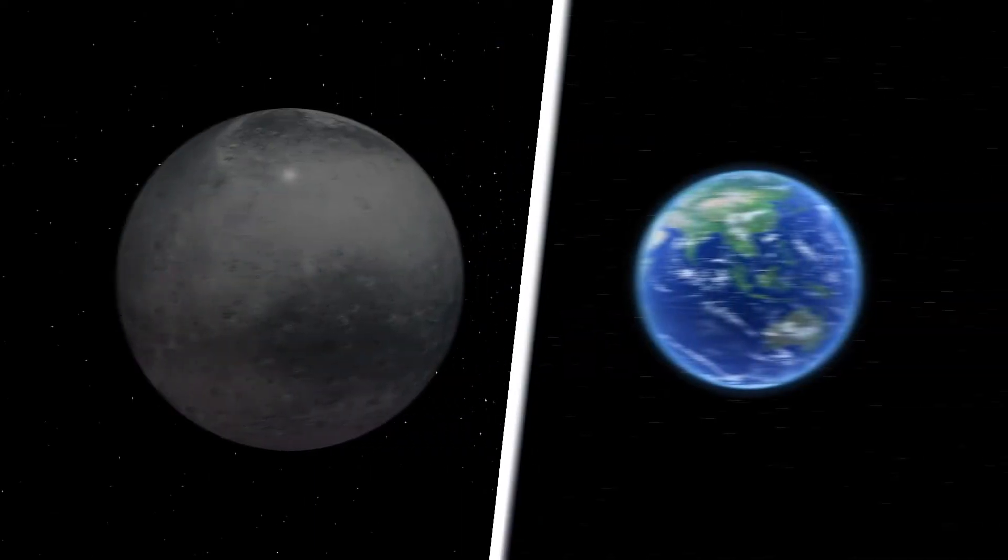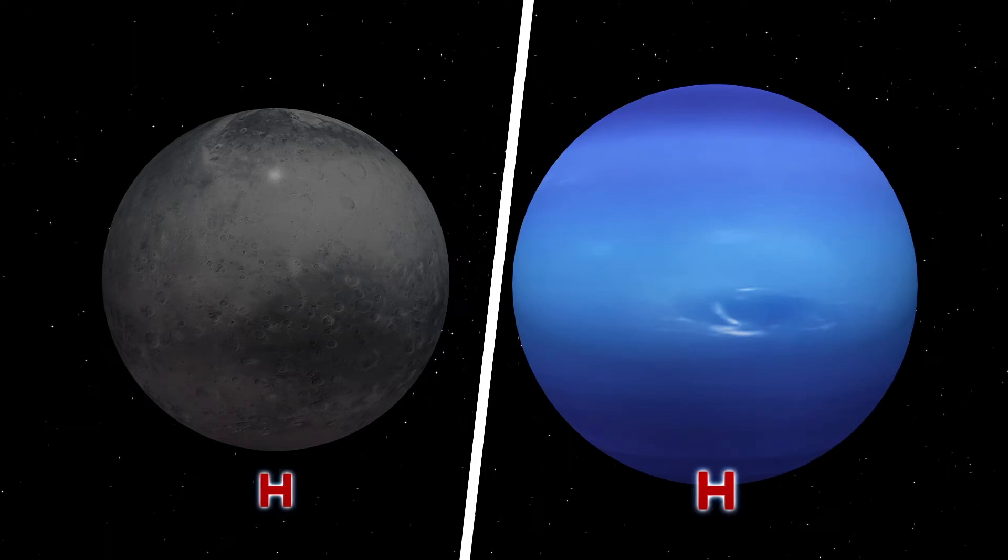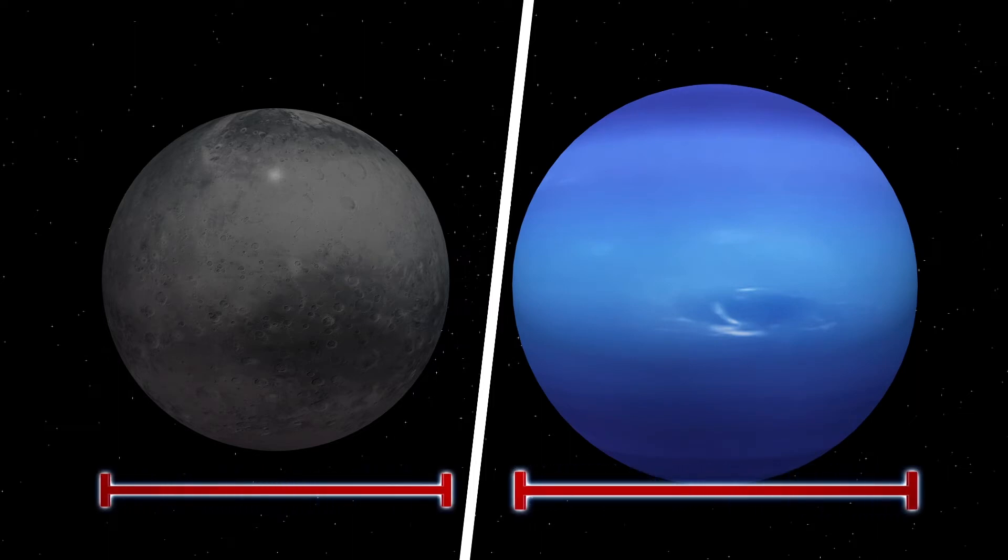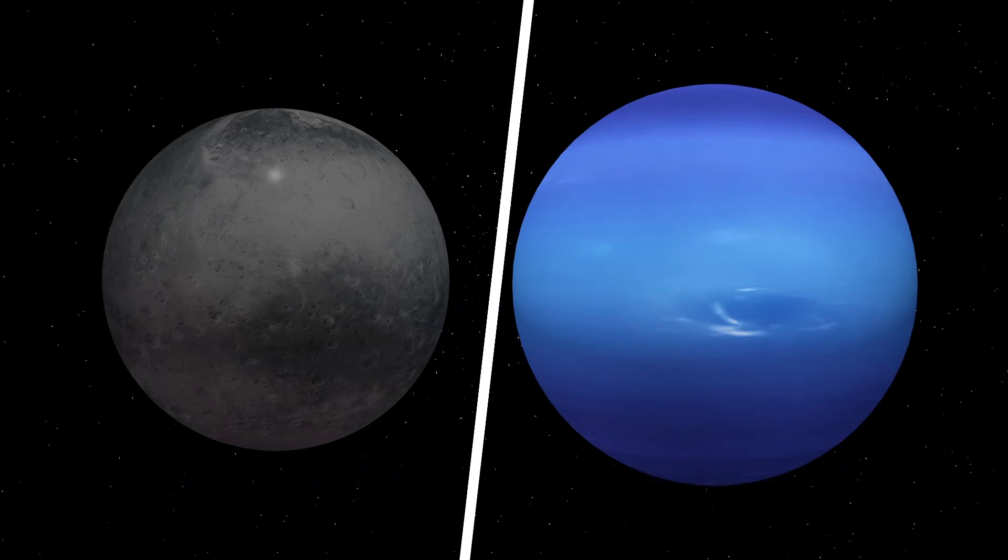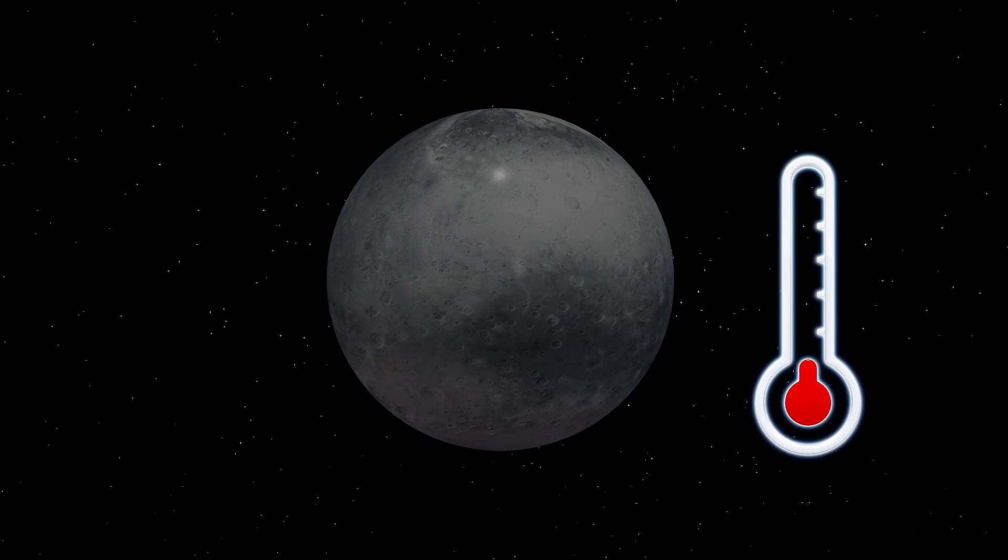The exoplanet, nicknamed the Forbidden Planet, is three times the size of Earth and has a radius that is only 20 percent smaller than Neptune. The exoplanet has temperatures of up to 1,000 degrees Celsius.